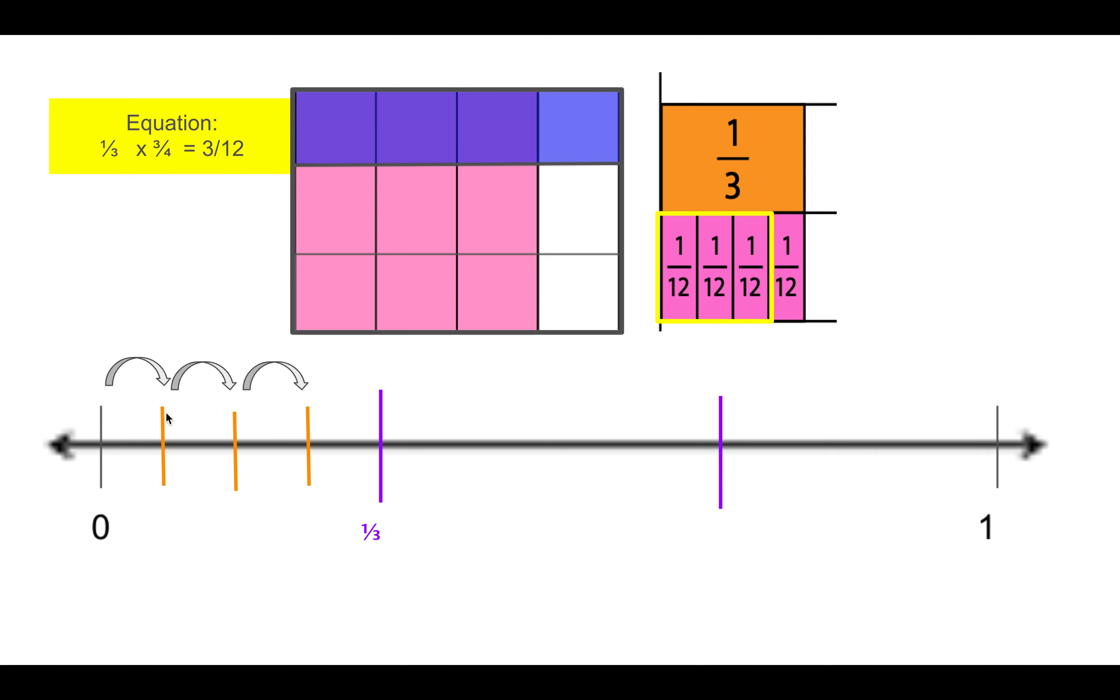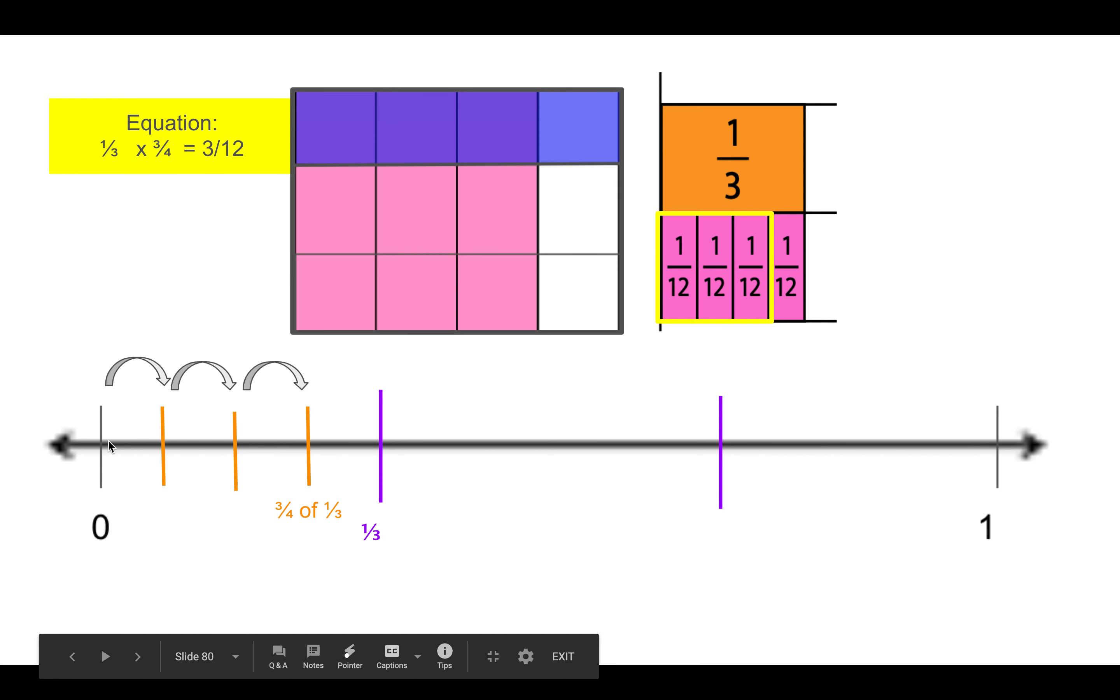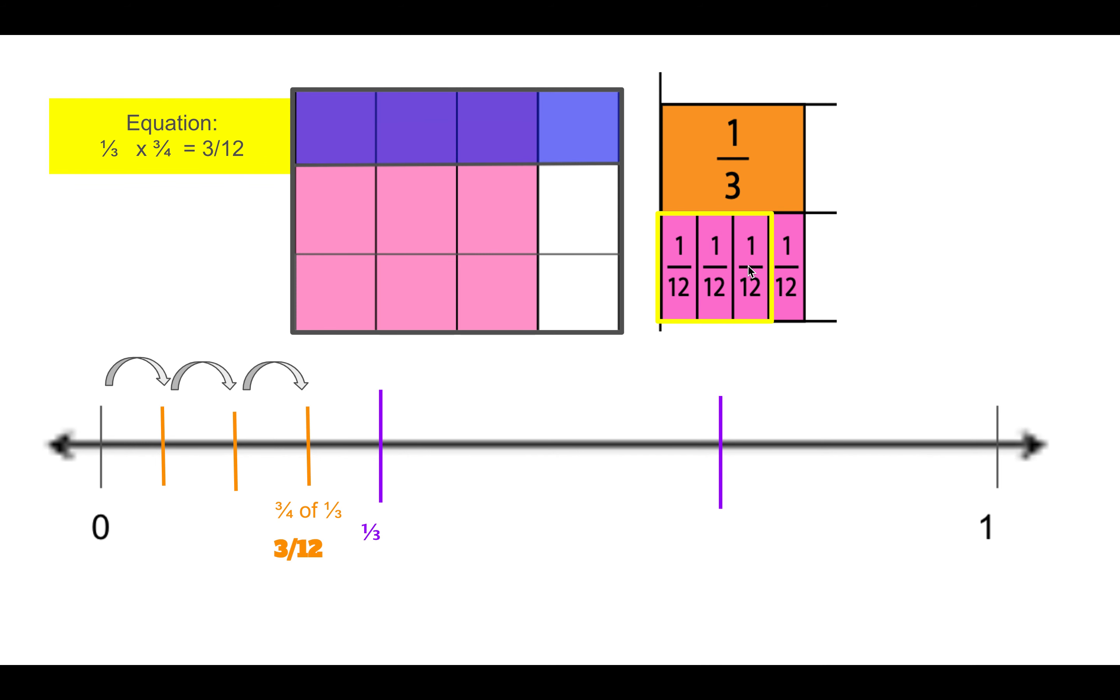And I'm going to go one, two, three fourths. So three fourths of that one third is three twelfths. Just like you see here, three fourths of the one third is three twelfths.